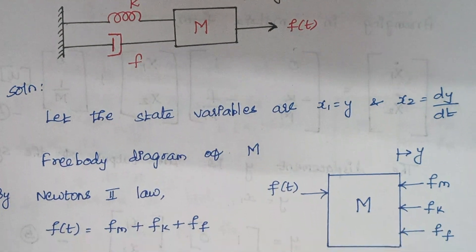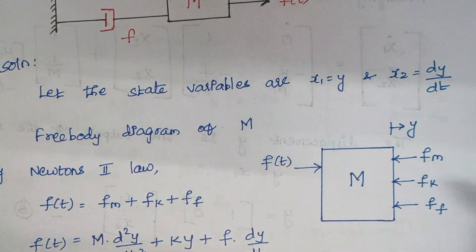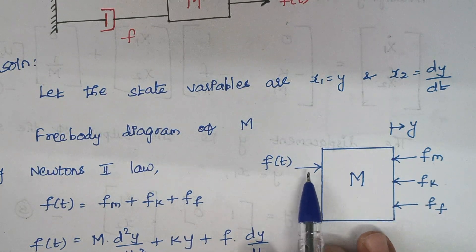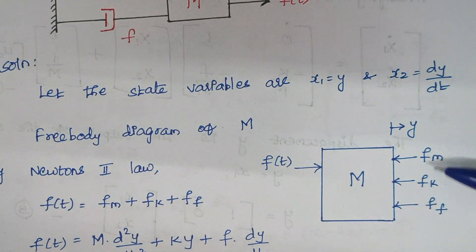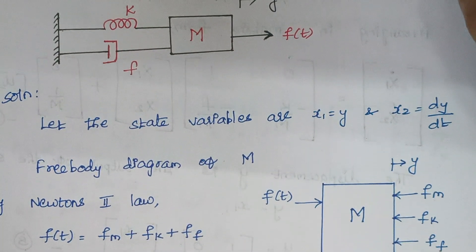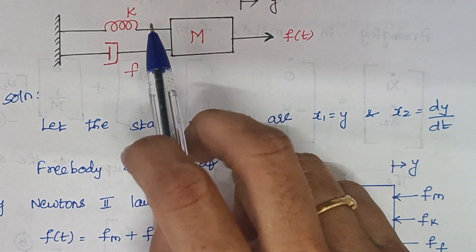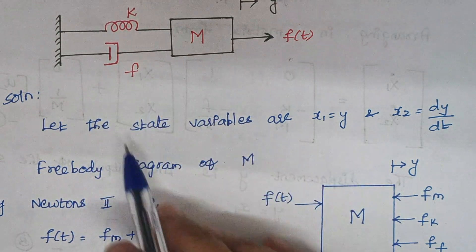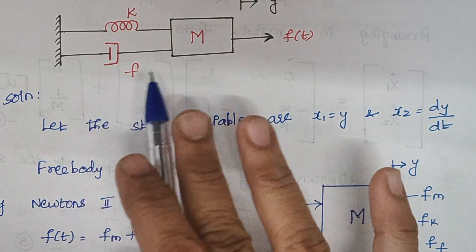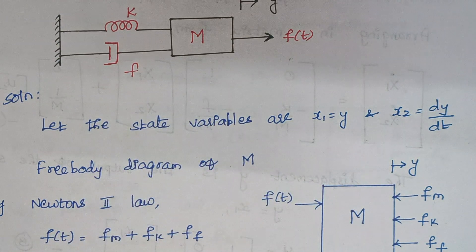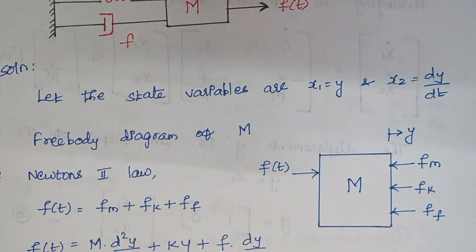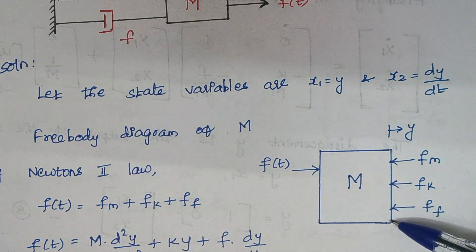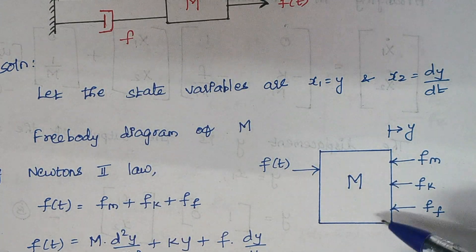So here, totally four forces are acting on our mass m. One is the applied force f(t) and the other three are the opposing forces. One opposing force is produced by the mass m, another one is produced by k, and another one is produced by f — the dashpot is represented as f. This is our free body diagram. From the free body diagram we have to write the respective expressions.